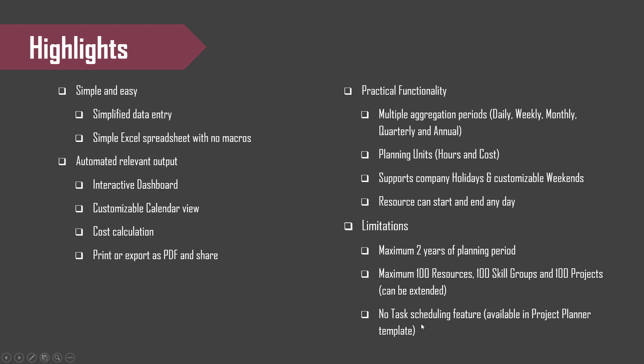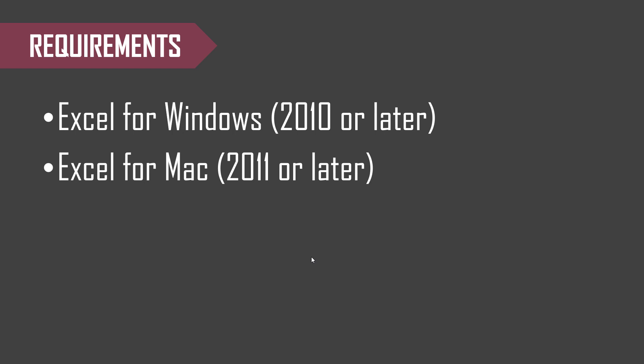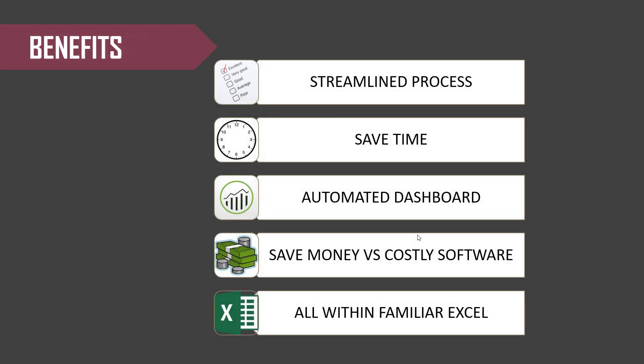There is no task scheduling feature. The demand is entered by the user specifically by date and assigned to the resource — the template will not automatically assign resources or schedule work. Scheduling is done in a separate template; if you are interested in that feature, please look for the Project Planner template. The system requirements are Excel for Windows 2010 or later, or Excel for Mac 2011 or later. The key benefits are a streamlined capacity planning process, significant time savings since you don't have to calculate manually, and simplified data entry with automated dashboard and calendar output.